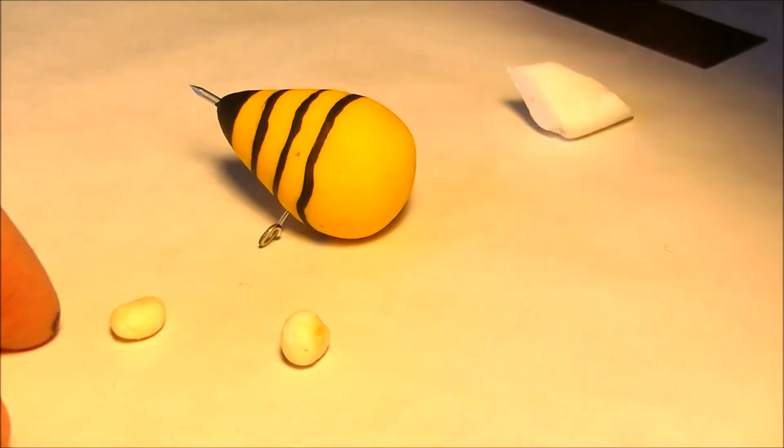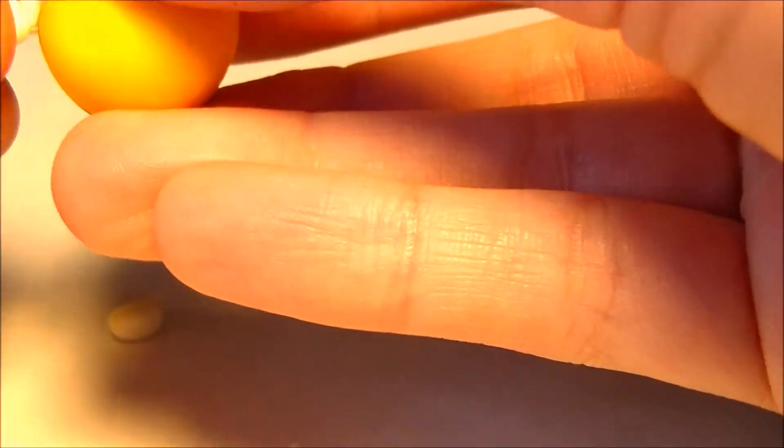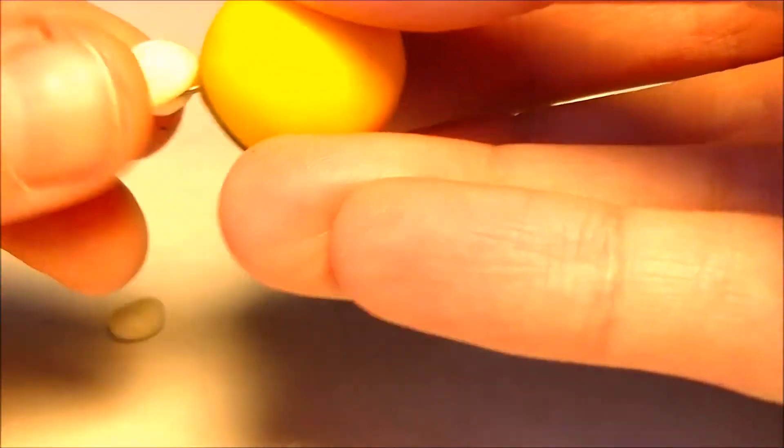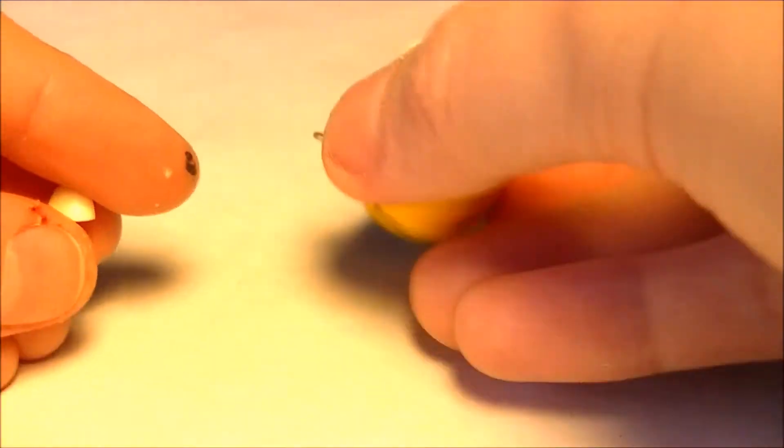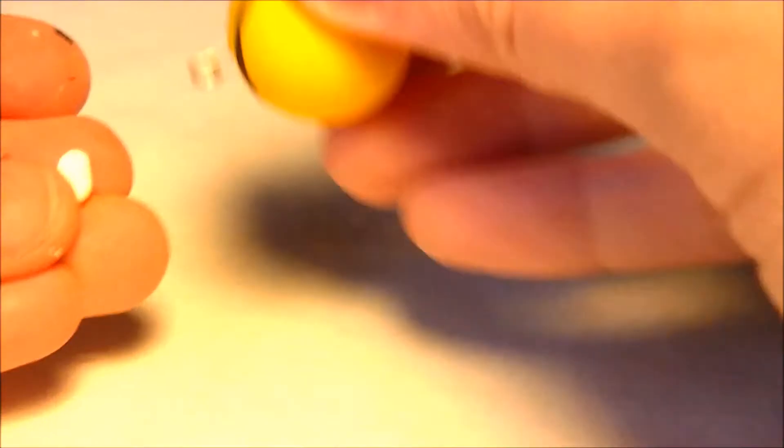Take some transparent clay and roll out two small balls. Sandwich the wing frame in between the two small balls. Very easy. Do that with each wing.